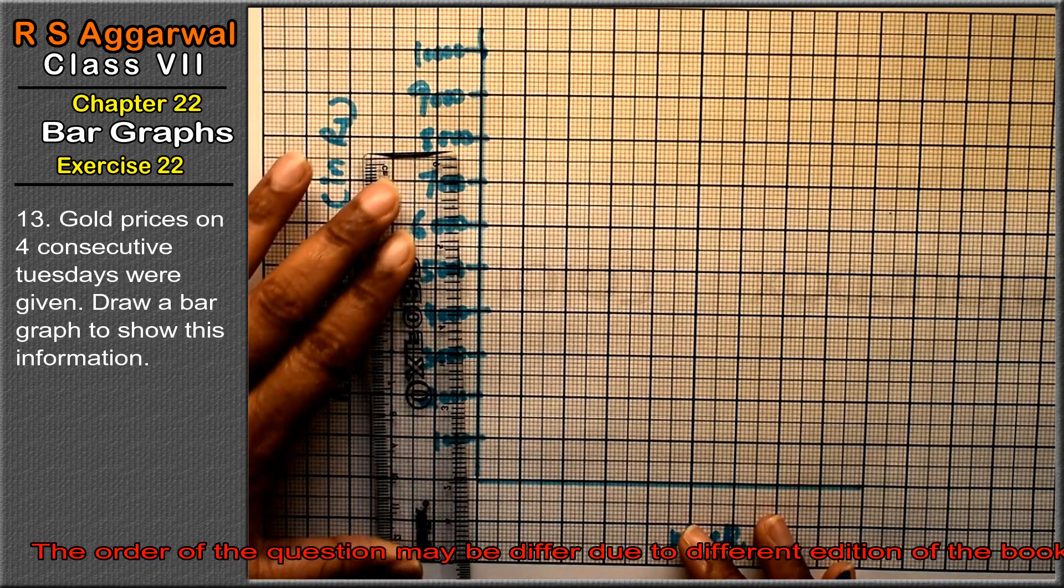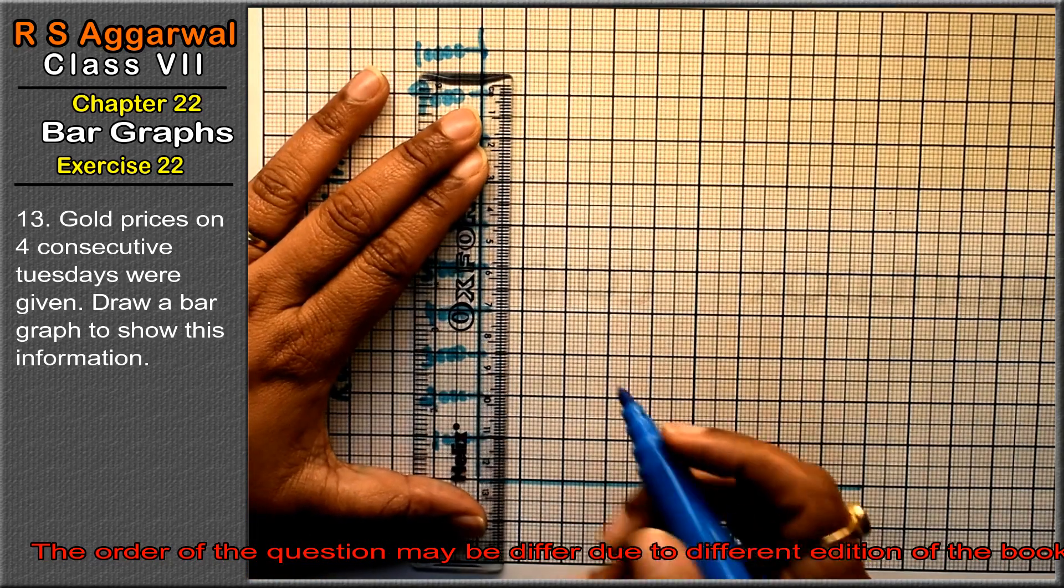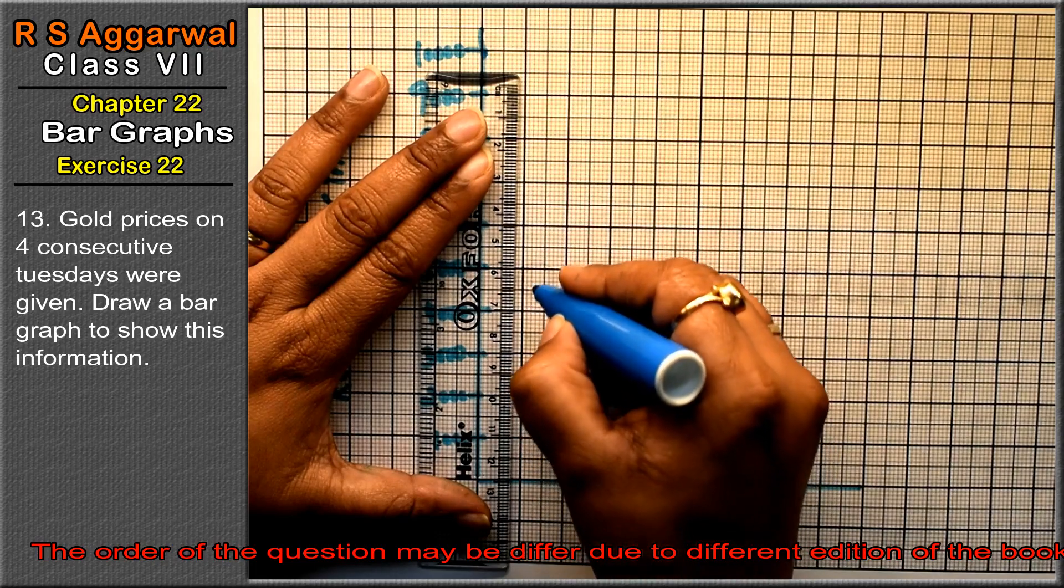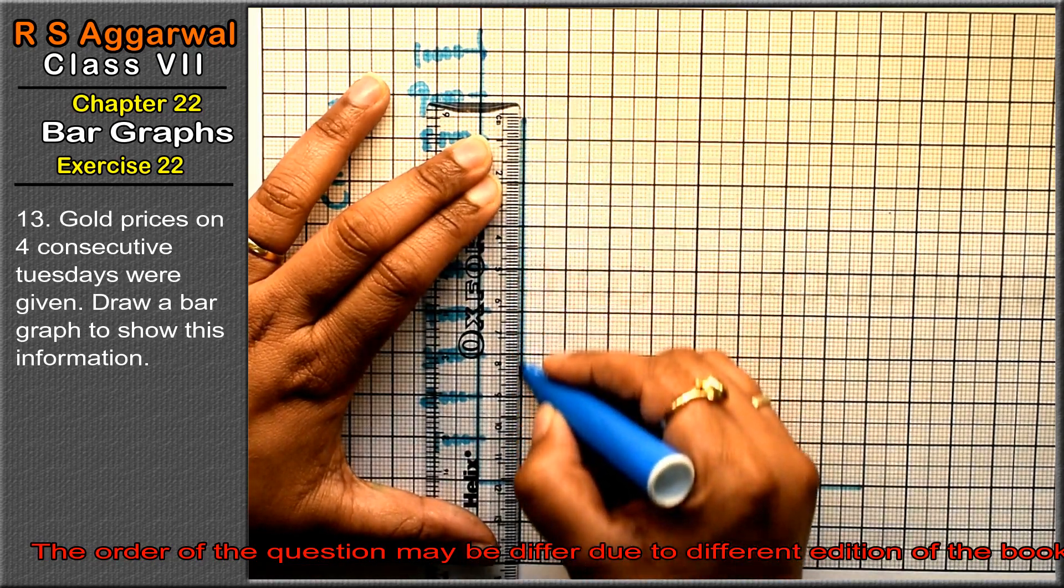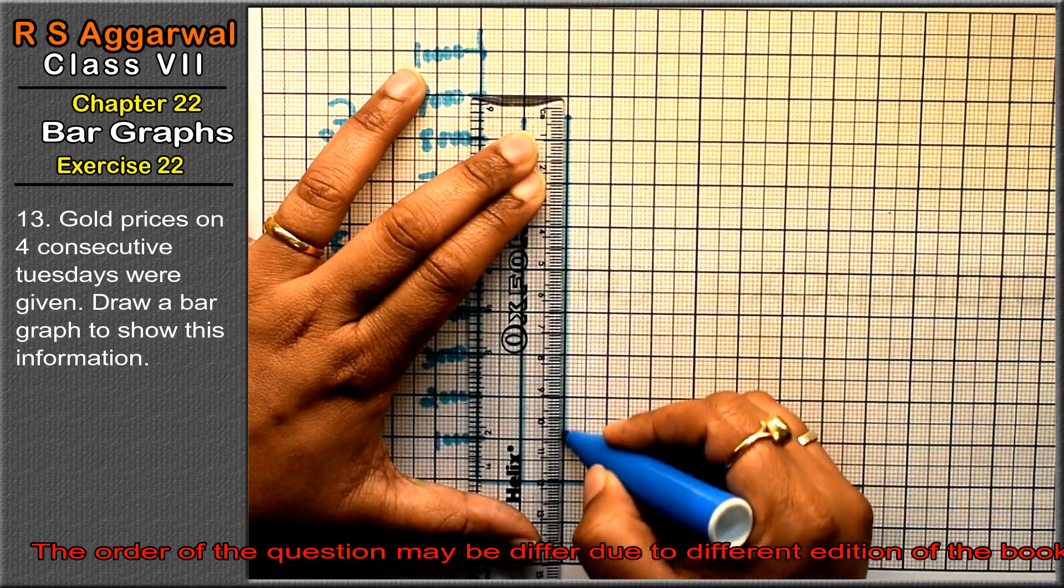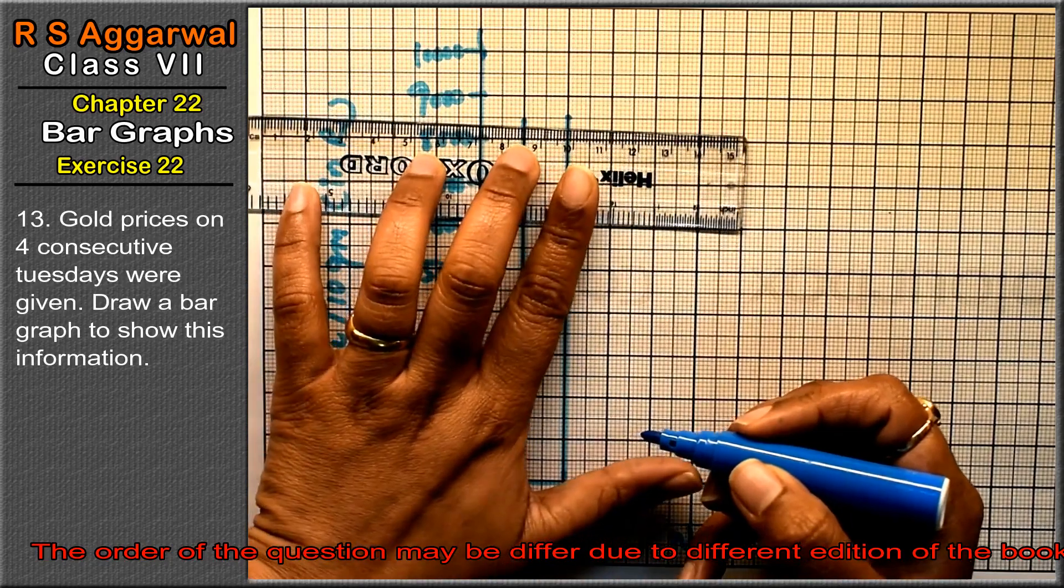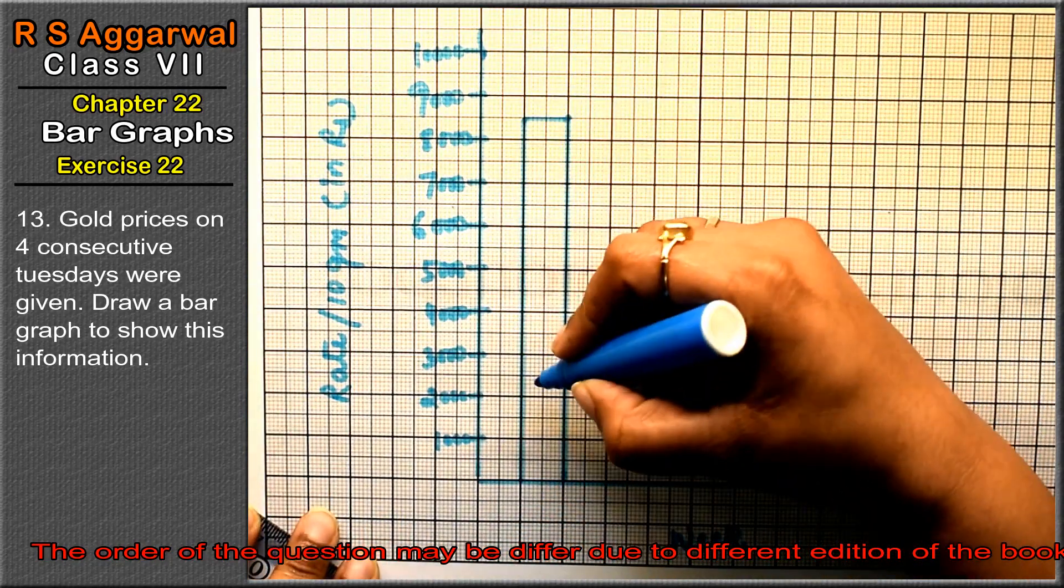So where are 85 blocks? 10, 20, 30, 40, 50, 60, 70, 80 and 5. This is our first week.